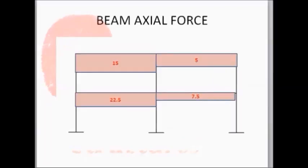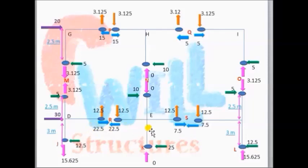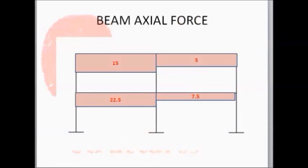For drawing axial forces, let's start with beam axial forces. The beam axial forces are shown by sky blue color arrows. For the first story, the first bay is 15 kN and the second bay is 5 kN. For the bottom story, the beam axial force for the first bay is 22.5 kN and for the second bay it is 7.5 kN.